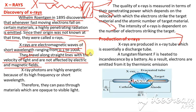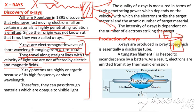These are all properties of X-rays. They are not affected by electric or magnetic fields — whether there is an electric field or a magnetic field, X-rays are not affected and continue moving in a straight line. X-ray photons are highly energetic.